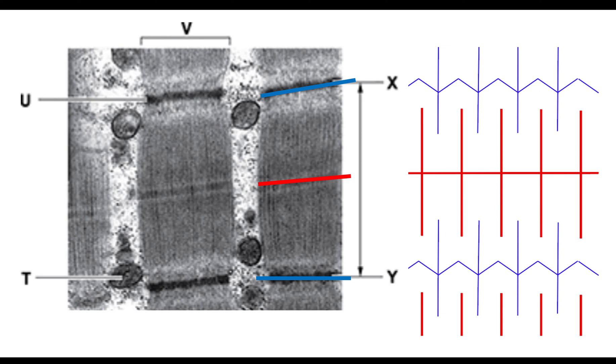When you're looking at the sarcomere, which is what's shown in this picture here, for example, what is the label of X to Y? That is a sarcomere. That's showing you from one Z line to the other.